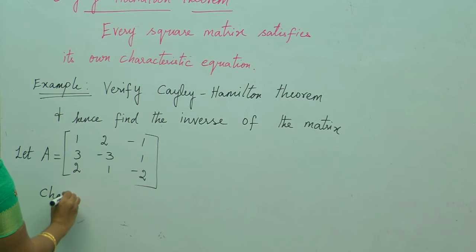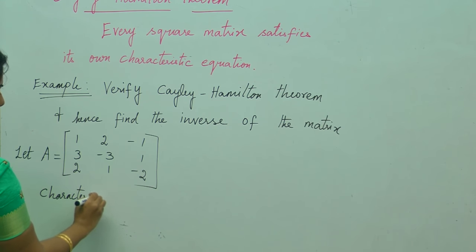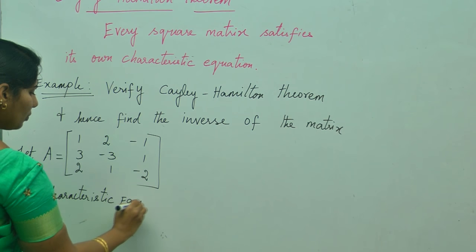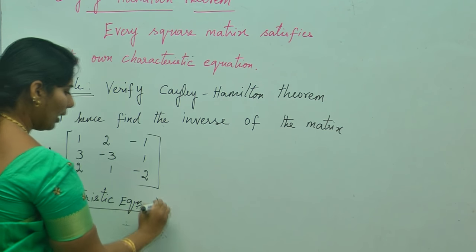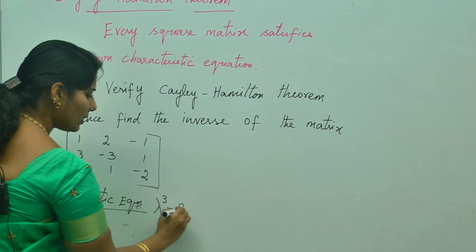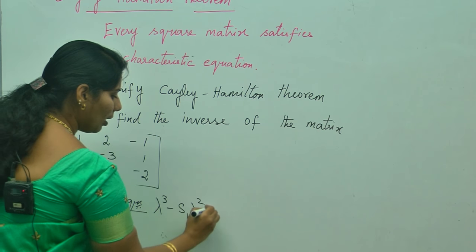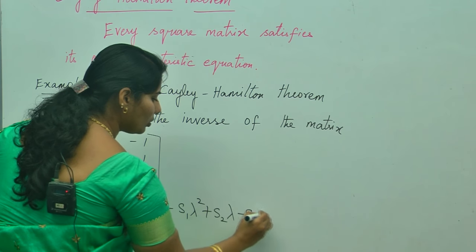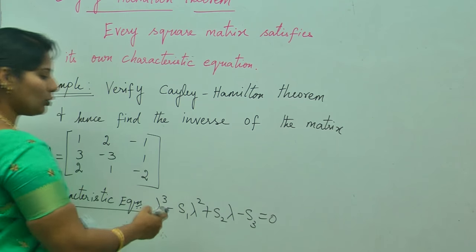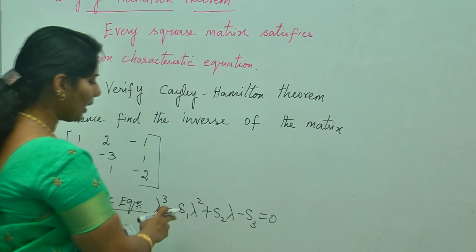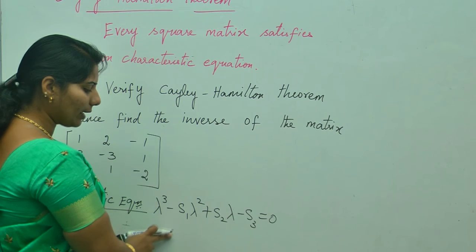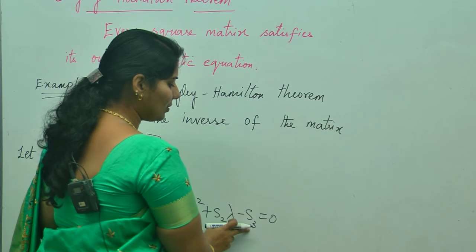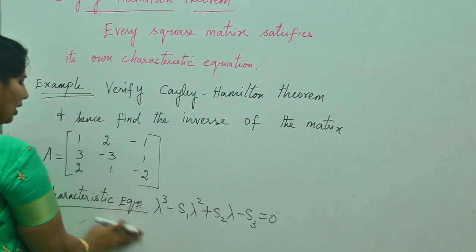First, let A be the given matrix. Find out the characteristic equation. The formula is: lambda cubed minus S1 times lambda squared plus S2 times lambda minus S3 equals 0. S1 is the sum of the diagonal elements, S2 is the sum of the minors of the diagonal elements, and S3 is the determinant of A.